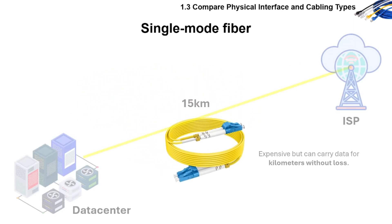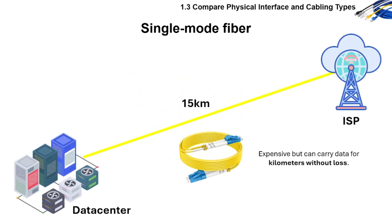Here's an example of a single-mode fiber usage. Think about the internet from an ISP to a data center — that link might stretch across cities or even further, so you use single-mode fiber. It's expensive and requires special transceivers, but it can carry data for kilometers without loss.